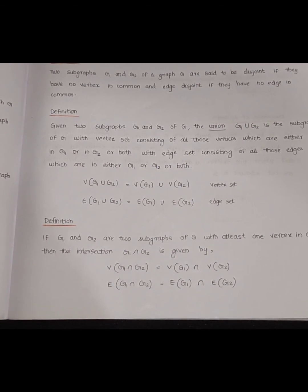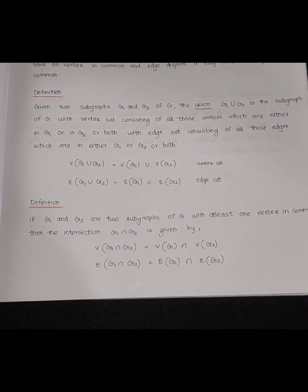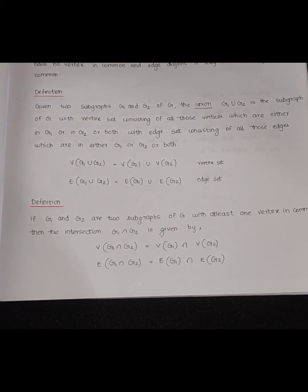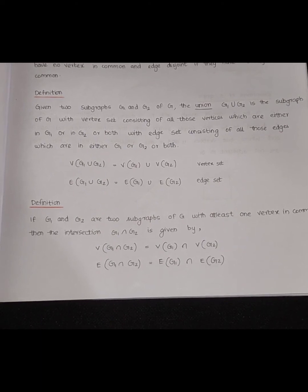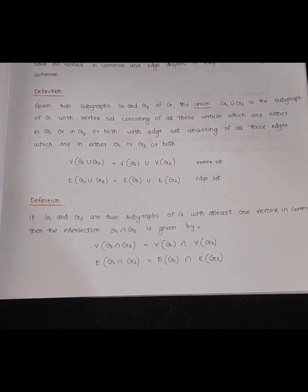Given two subgraphs G1 and G2 of G, the union G1 ∪ G2 is a subgraph of G whose vertex set consists of all vertices which are either in G1 or in G2. So V(G1 ∪ G2) = V(G1) ∪ V(G2), and similarly E(G1 ∪ G2) = E(G1) ∪ E(G2).